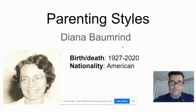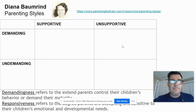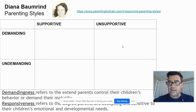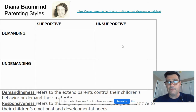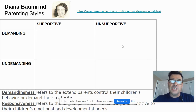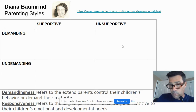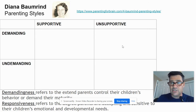Add Diana Baumrind at the top of your page. We're going to look at different parenting styles as part of development, because who you are as a person is hugely influenced by the environment you grew up in. Looking at your chart, you have 'demanding' and 'undemanding' on the left, and 'supportive' and 'unsupportive' at the top. She classifies parents along these two dimensions — do they demand, or not? Are they supportive, or not? Write these definitions somewhere on your paper.